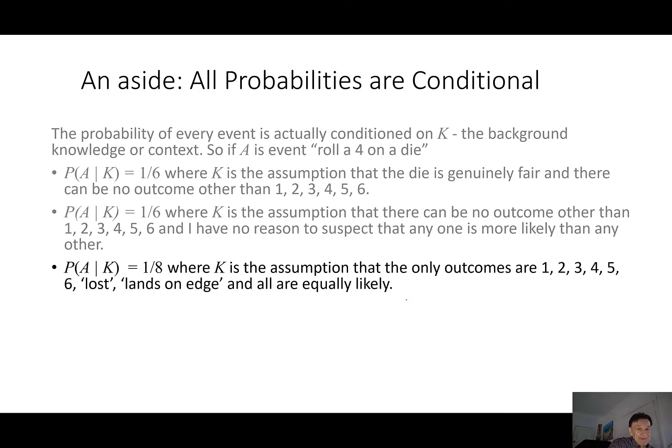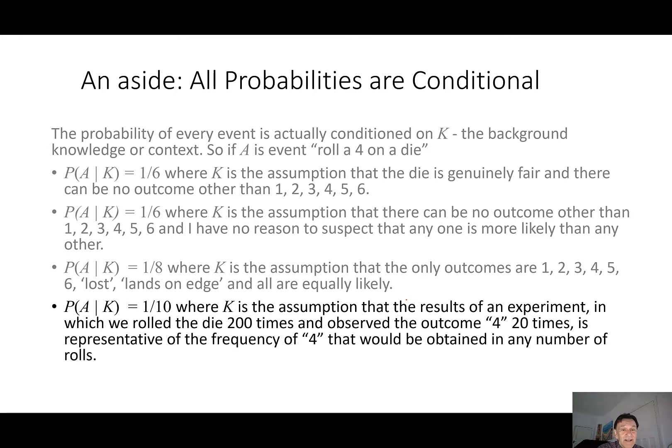But the probability of a given k might be 1/8 if k is the assumption that the only outcomes are 1, 2, 3, 4, 5, 6, lost, and lands on edge, and all of those are equally likely. Or it might be 1/10 if k is the assumption that the results of an experiment in which we roll the die 200 times and observe the outcome 4 20 times is representative of the frequency of 4 that would be obtained in any number of rolls of the die.